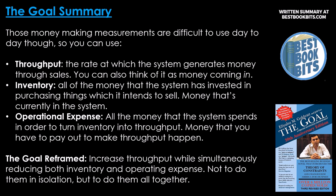Those money-making measurements are difficult to use day-to-day, so instead you can use three operational measures. Throughput: the rate at which the system generates money through sales — think of it as money coming in. Inventory: all the money that the system has invested in purchasing things which it intends to sell — money currently in the system. Operational expense: all the money that the system spends in order to turn inventory into throughput — money you have to pay out to make throughput happen. The reframed goal is to increase throughput while simultaneously reducing both inventory and operating expense — not in isolation, but altogether.